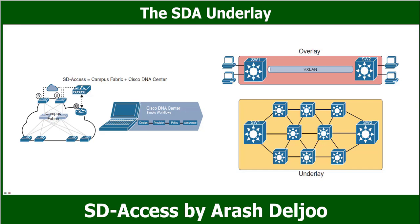To build an SDA underlay network, companies have two basic choices. They can use their existing campus network and add new configuration to create an underlay while still supporting existing production traffic with traditional routing and switching. Alternatively, the company can purchase new switches, build the SDA network without concern for harming existing traffic, and migrate endpoints to the new SDA network over time.